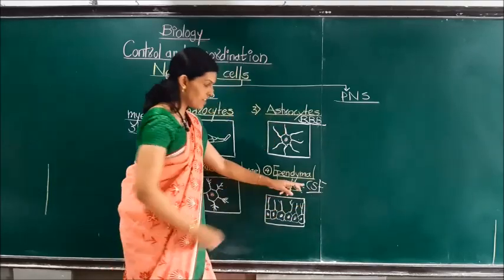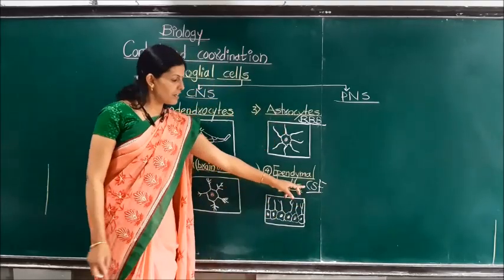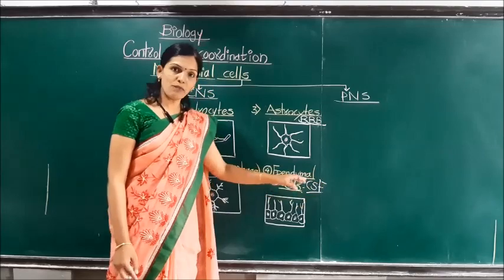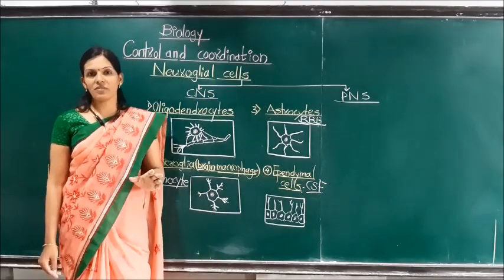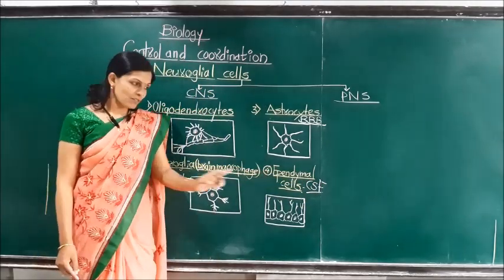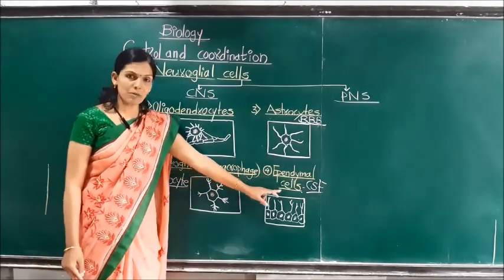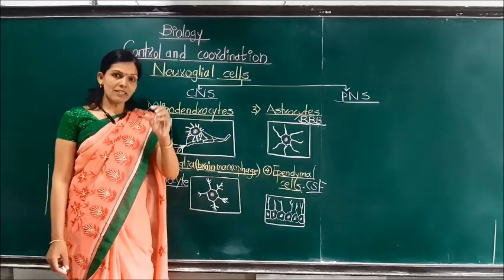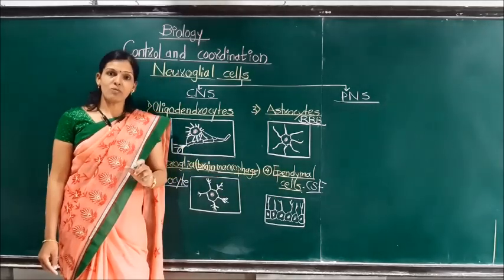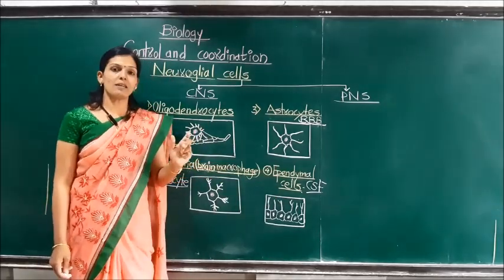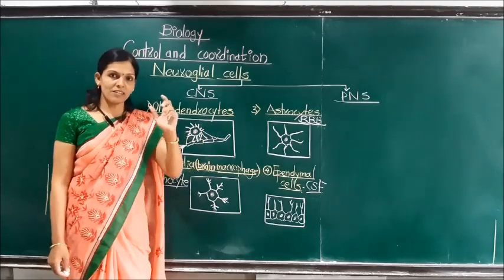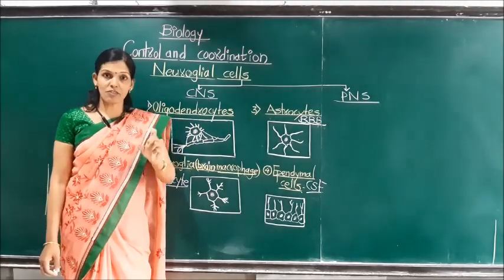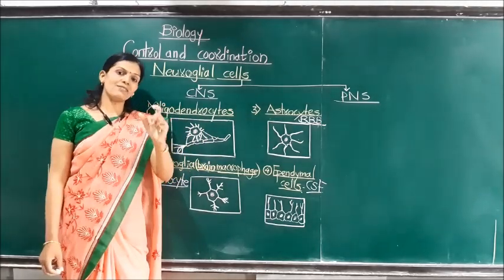What is CSF? CSF stands for cerebrospinal fluid. It is an alkaline fluid present in our nervous system, secreted by ependymal cells. This cerebrospinal fluid is present in the ventricles of the brain as well as in the central canal of the spinal cord.